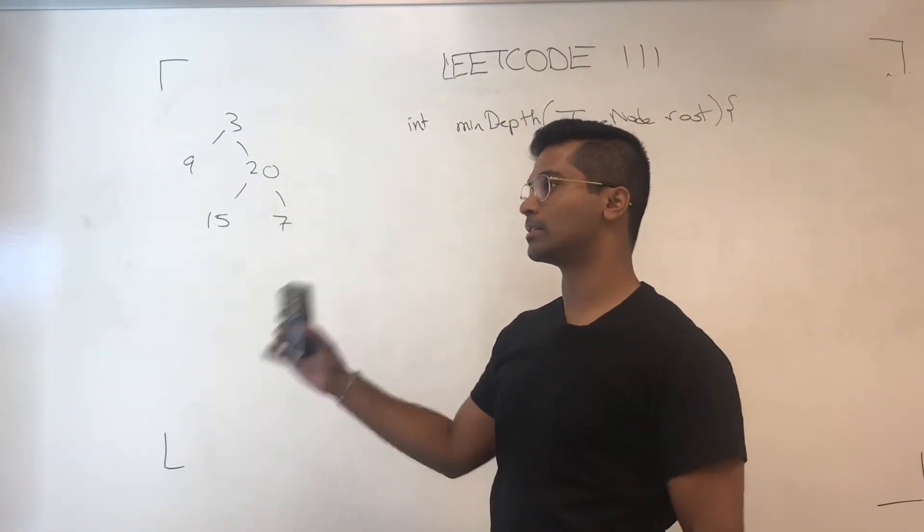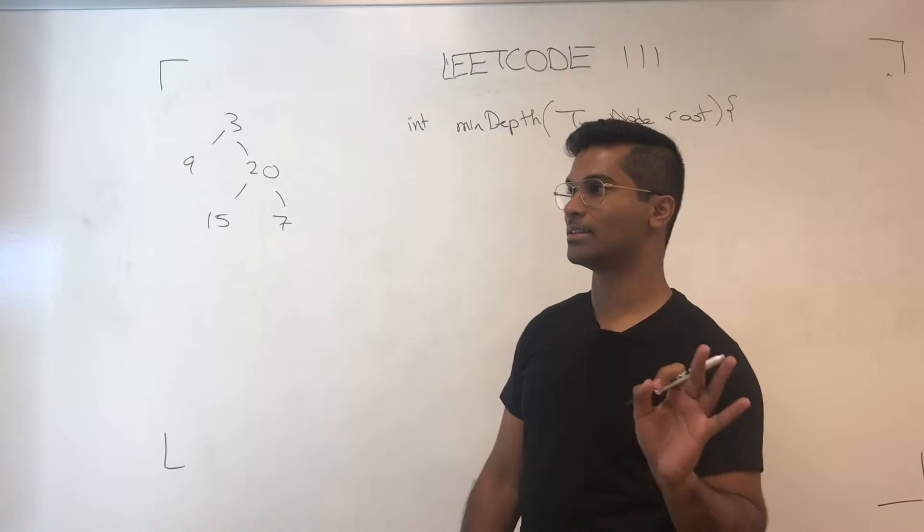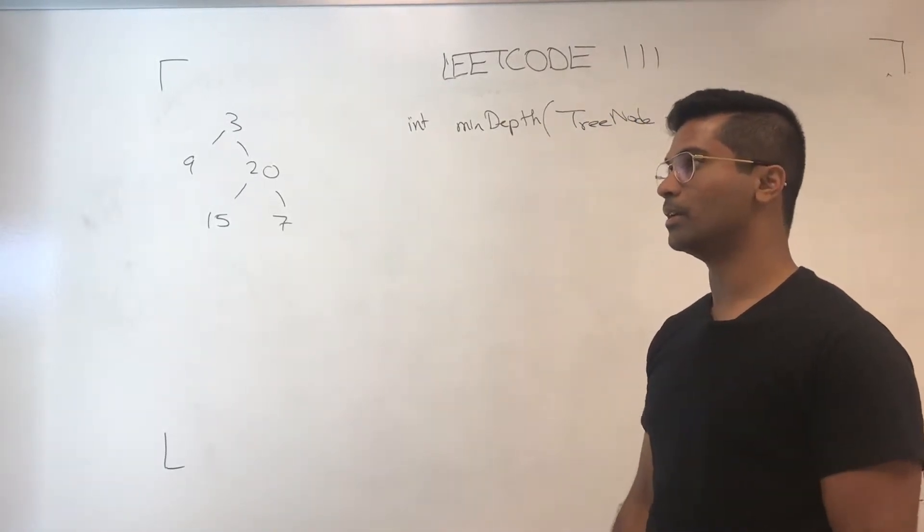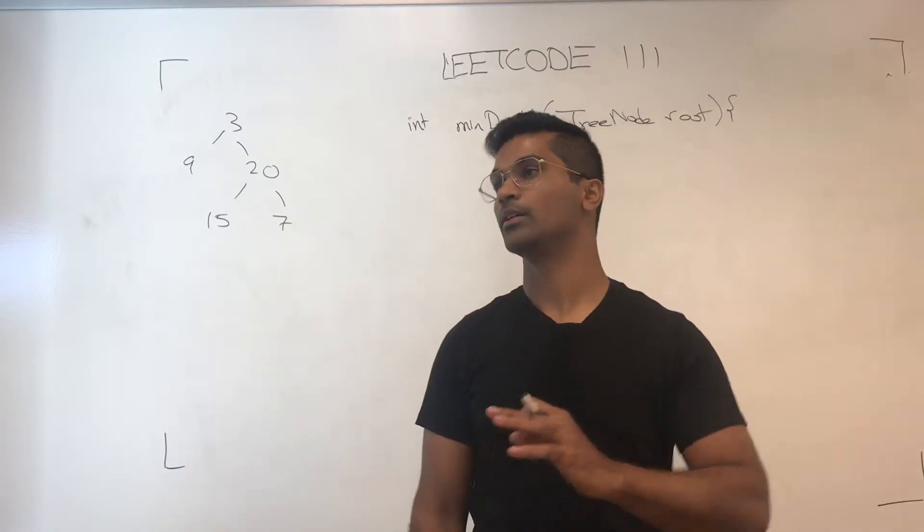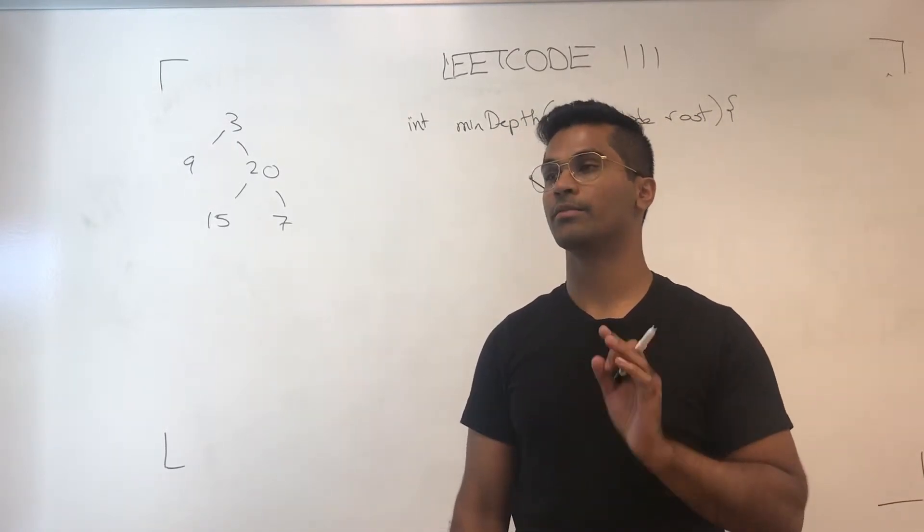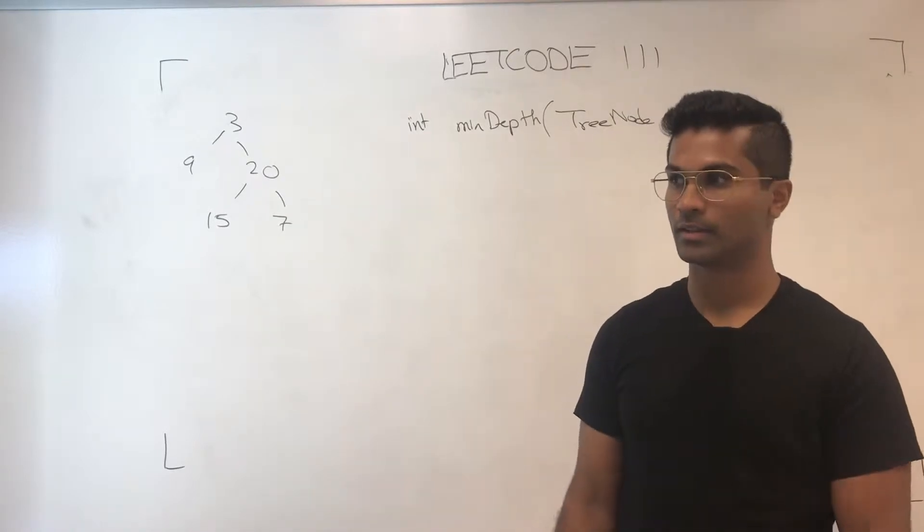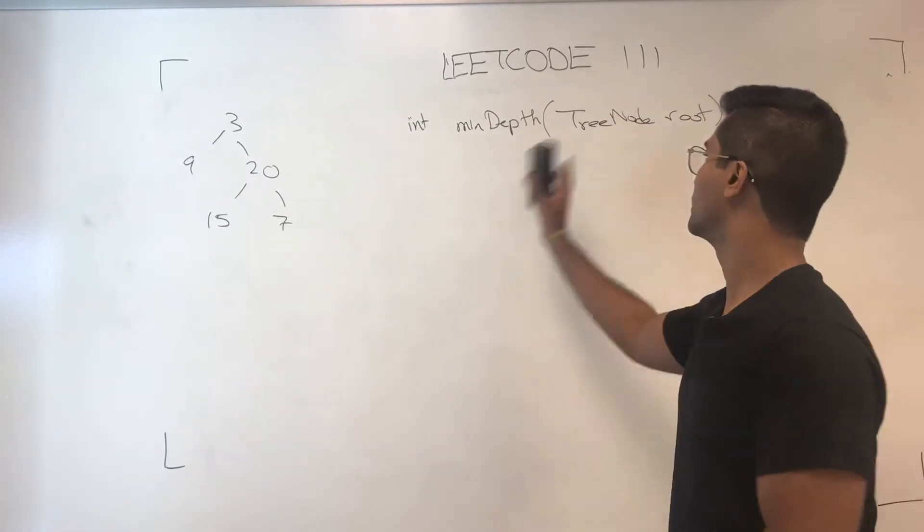So the way I'm going to solve it is keep an int that I increment every time we encounter a new layer. And once we encounter a node which does not have a left or right child, then we return the count of layers, or depth.